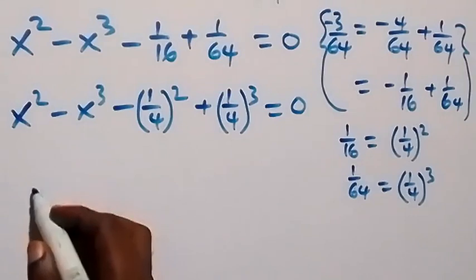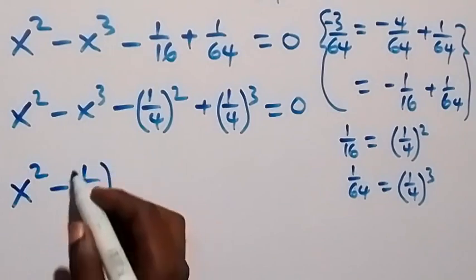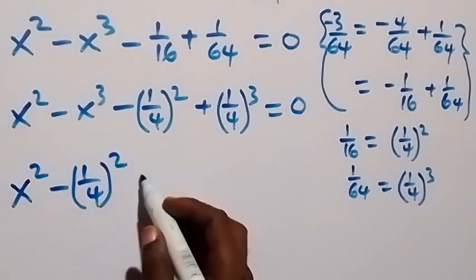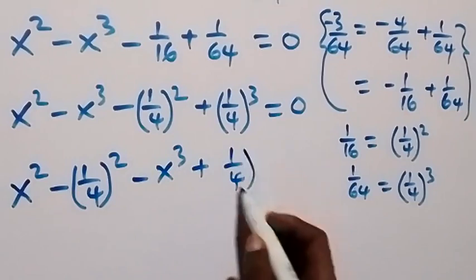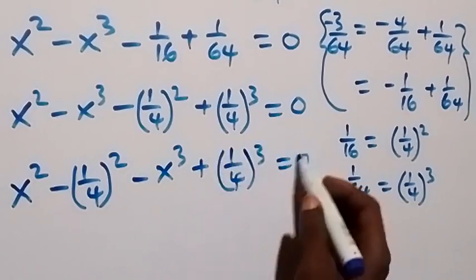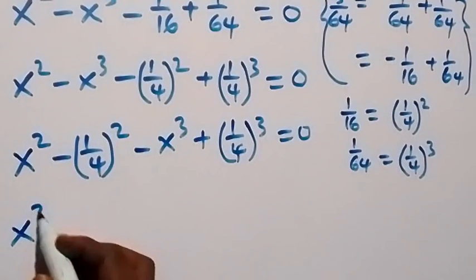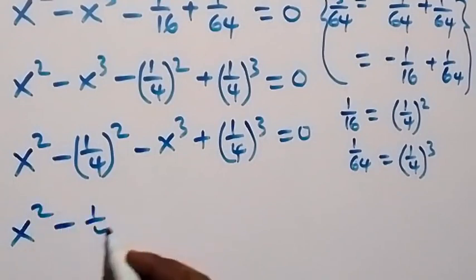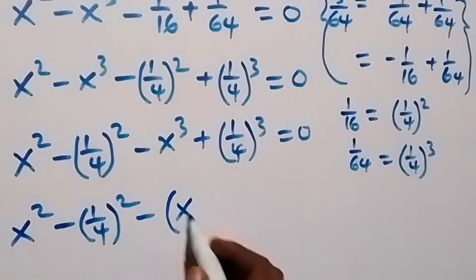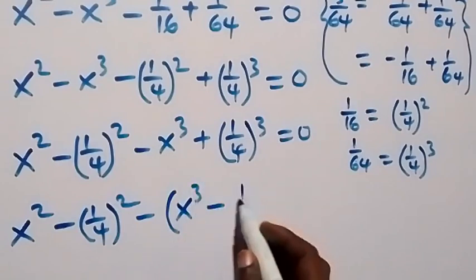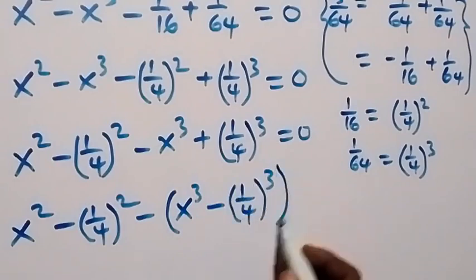From here we can group like terms together. We have x squared minus 1 over 4 squared, then minus x cubed plus 1 over 4 raised to power 3, equals to zero. This can be written as x squared minus 1 over 4 all squared, then minus in bracket x cubed minus 1 over 4 all raised to power 3, close bracket, equals to zero.